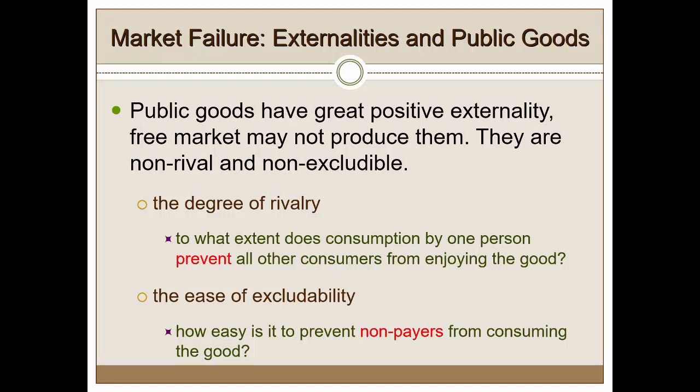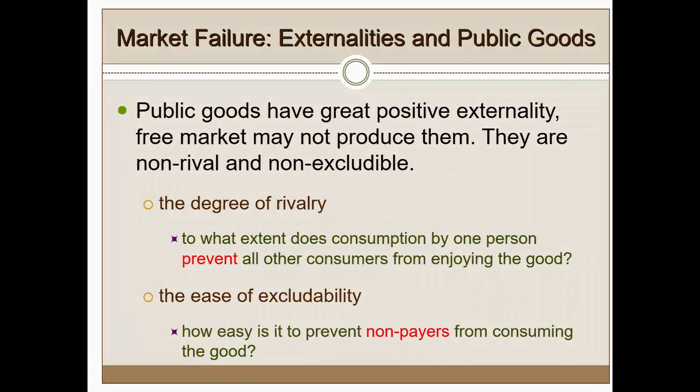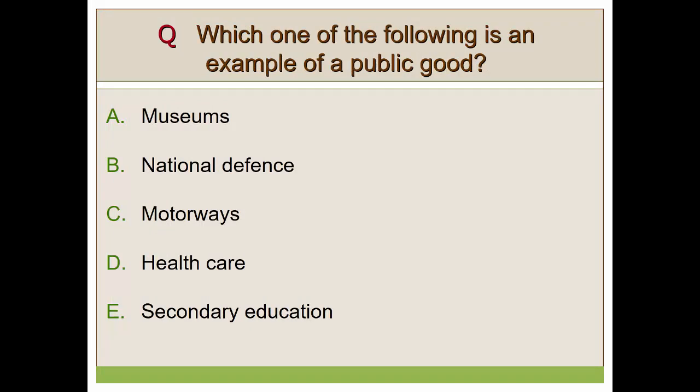These two characteristics of public goods — non-rivalry and non-excludability — imply that no free market participants, meaning private firms or capitalists, provide these services. Now here's a quick question: given the definitions we've made, which one of the following is an example of a public good? Please look at the choices for about 10 seconds.